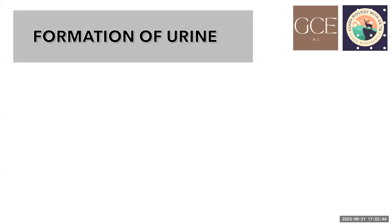I would like to start from last week's class to revise what we have learned, and then we can learn a new lesson today. The main lesson was formation of urine, and last week we learned that the formation of urine happens in three steps: ultrafiltration, selective reabsorption, and secretion.